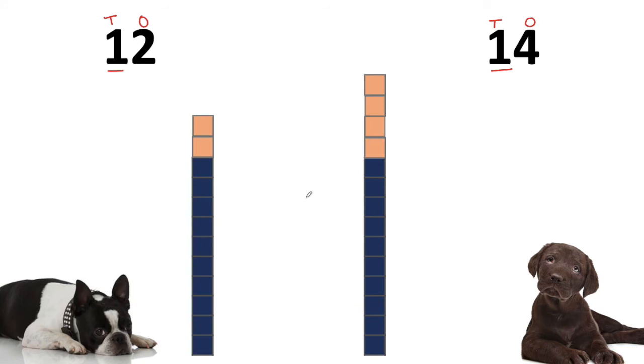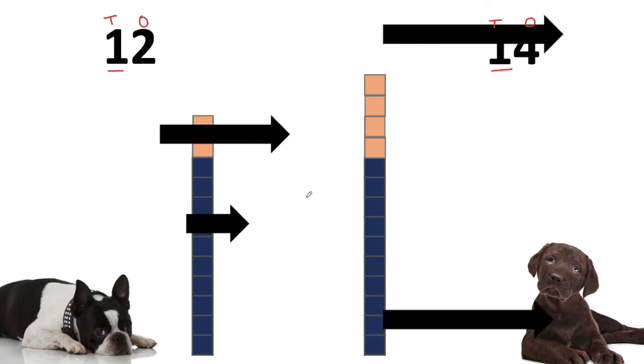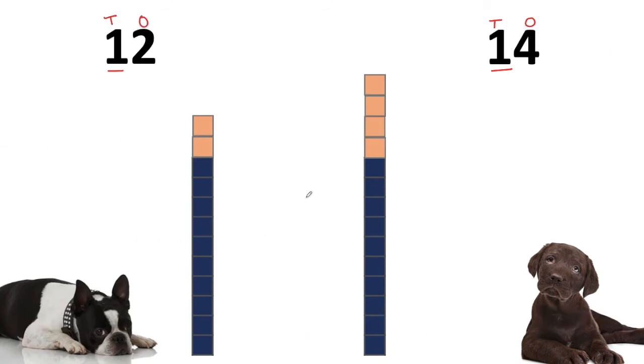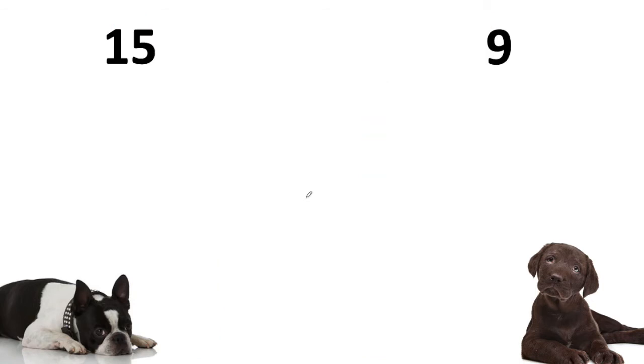So instead of saying that 14 is bigger or greater than 12, when we read from left to right, we can say that 12 is less than 14. Let's work on another one together.